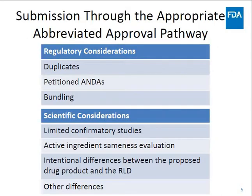There are certain regulatory and scientific considerations for applicants to consider when determining which of the abbreviated approval pathways is the appropriate path for their proposed drug product. First, the regulatory considerations: if an applicant's proposed drug product is a duplicate of an RLD and eligible for approval as an ANDA, they should submit an ANDA. FDA will refuse to file a B2 application for a drug that is a duplicate of a listed drug and should be submitted as an ANDA.